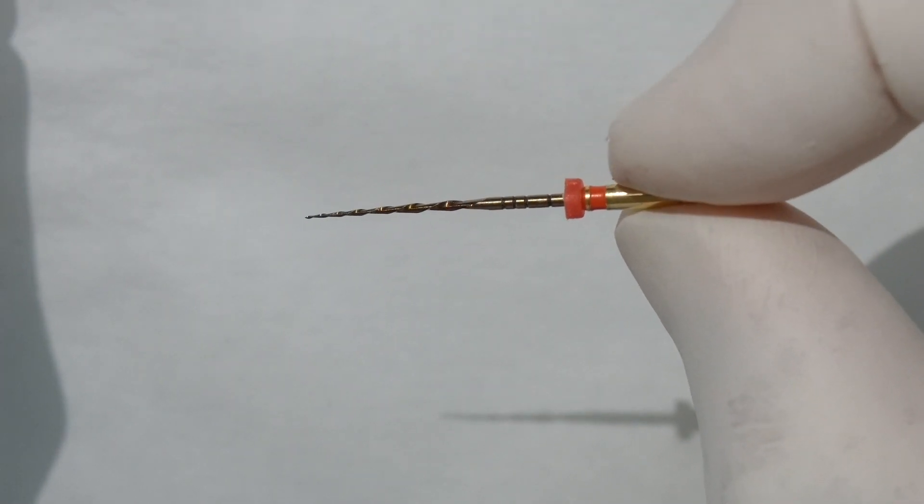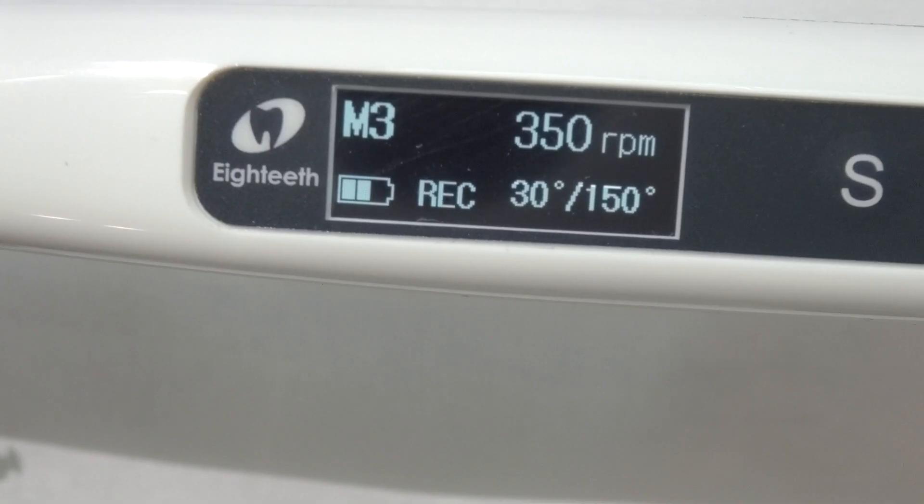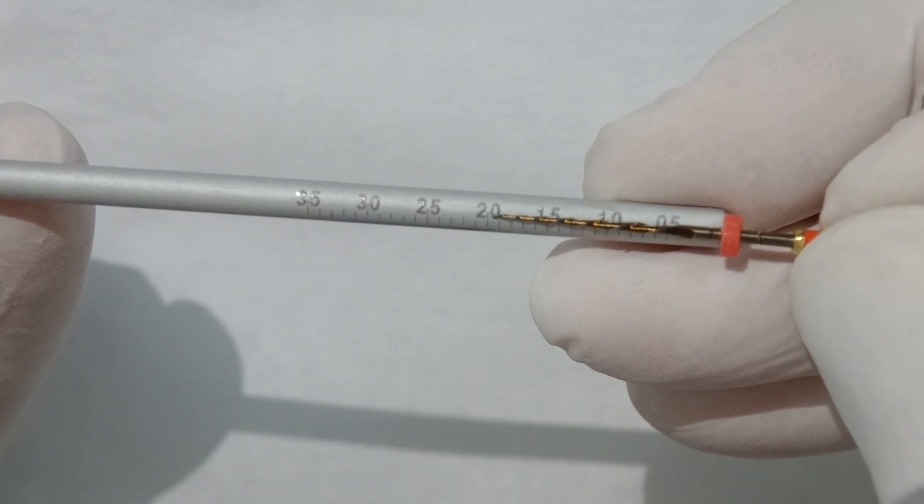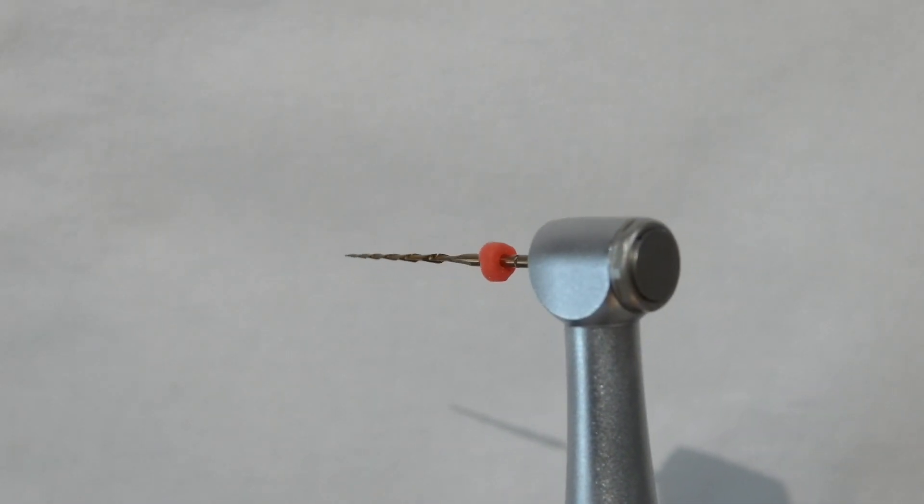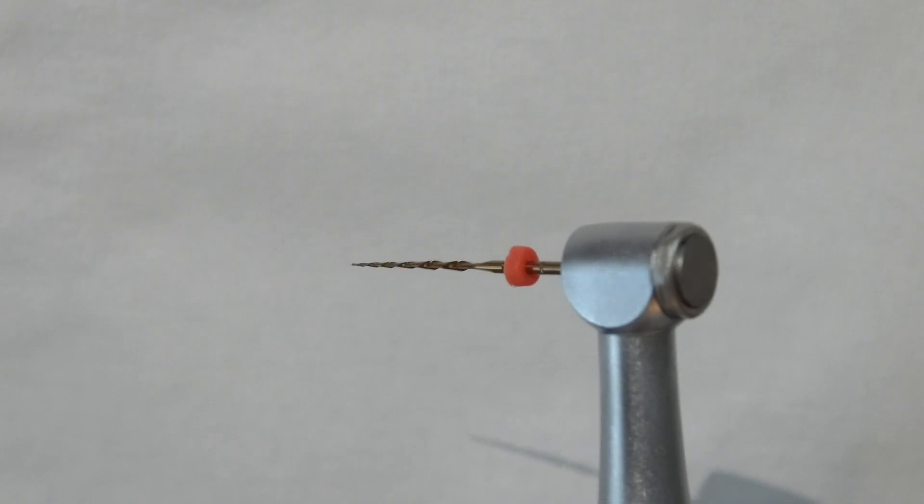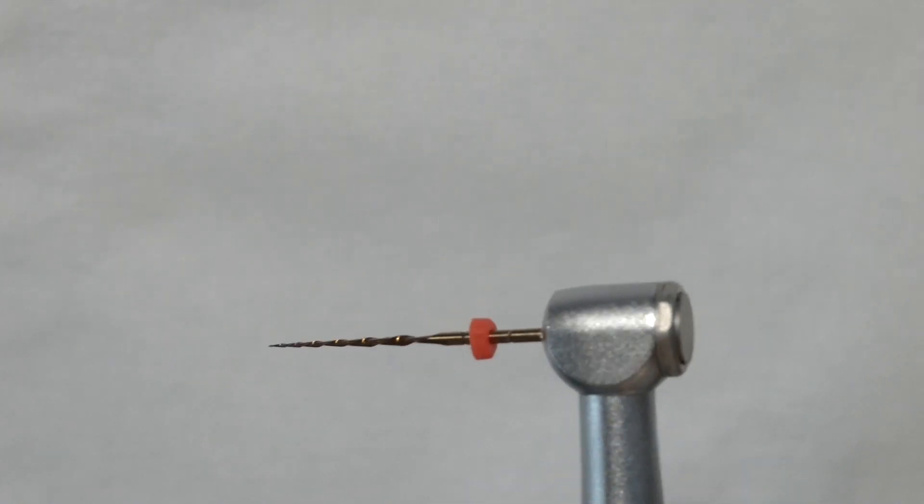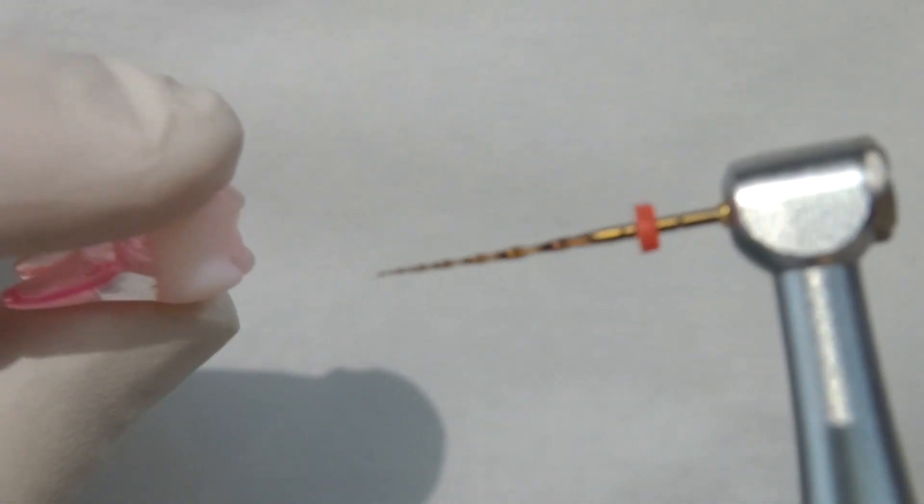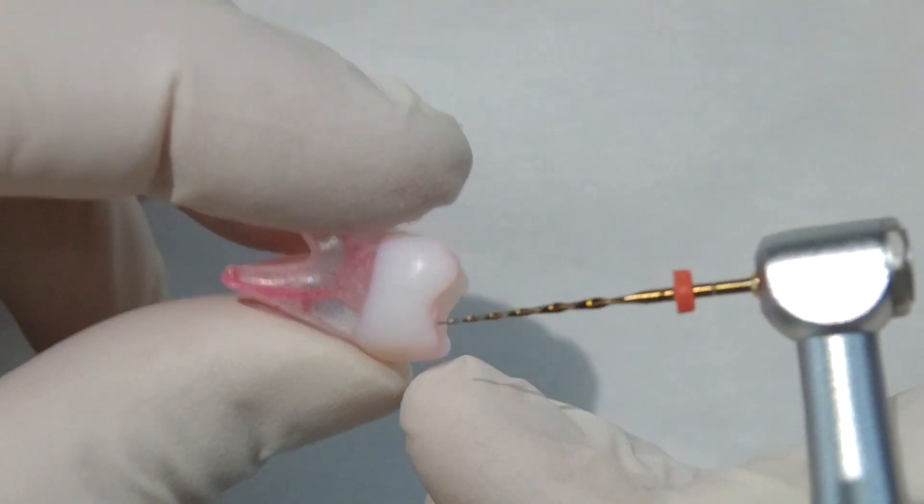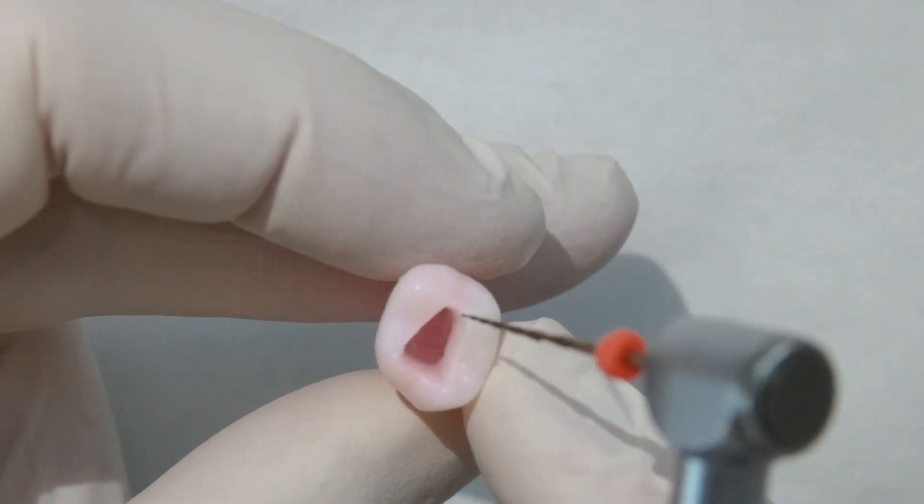This is our VFR file. It's a size 25. We put it on the same settings that you would run other types of reciprocating files on. So measure that to the working length. You can see it's got this oscillating action. It runs in reverse, so our cutting is 150 degrees anticlockwise, and then it gives that 30 degree unwind just to release any tension that might have built up in the file.